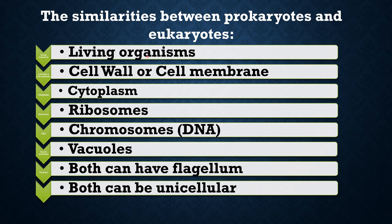Both kinds of cells are living organisms. They may have a cell wall or cell membrane, which exists as the outer covering of the cell. They have cytoplasm, ribosomes, and chromosomes. Both kinds of cells can also have a flagellum — some animal eukaryotic cells can have a flagellum, as can prokaryotic cells.